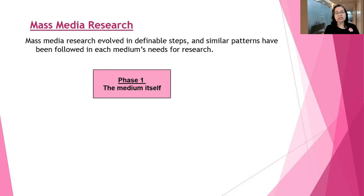Phase one looks at the medium itself. What is it? How does it work? What technology does it involve? How is it similar or different from what we already have? What are the function and services it provides? Who will have access to it? How much will it cost? This study is applicable when there is new media being introduced into the field. For example, the use of TikTok in journalists' reporting is one possible area of study.